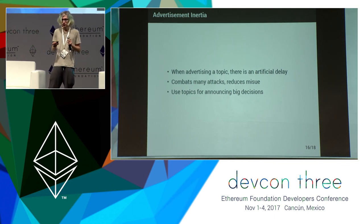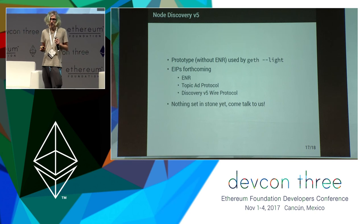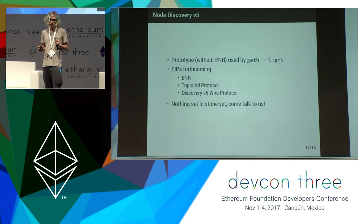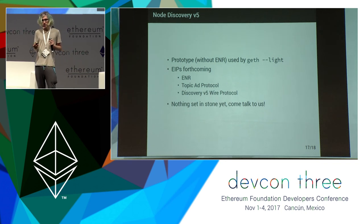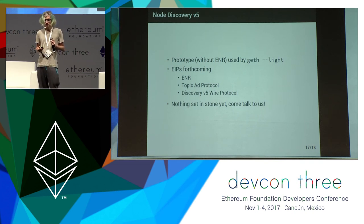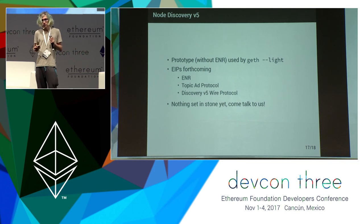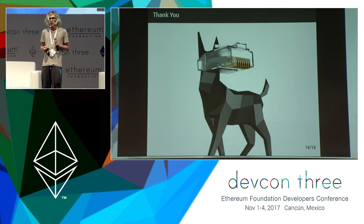We really want topics to be used for facts that have bigger meaning. To recap: node discovery version 5 is about finding nodes more efficiently and knowing more about those nodes before we connect. A prototype of the system, although without ENR, has been in use by the Geth light client since early 2017. We're still working on the EIPs so nothing is published yet, but once it is we'll have a separate spec for ENR, a document on the semantics of the topic advertisement protocol, and a description of the actual wire protocol spoken via UDP. Nothing is set in stone yet, so if you feel there's a change that has to be made or a feature that should be included or not, come talk to us. That's it.